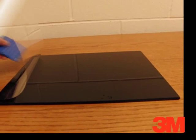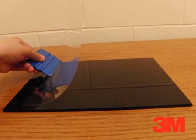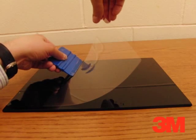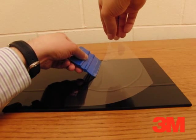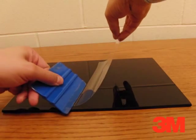For the squeegee method, use a squeegee with Teflon tape wrapped around the blade to prevent scratching the film or print. Now apply a little pressure and push the adhesive onto the substrate.